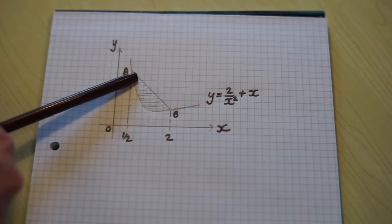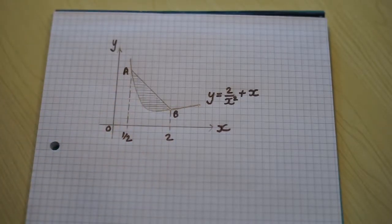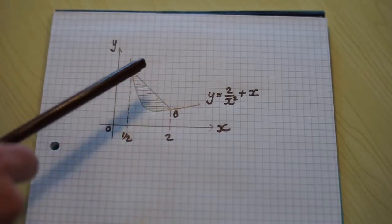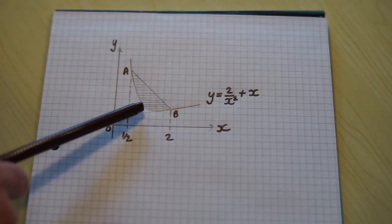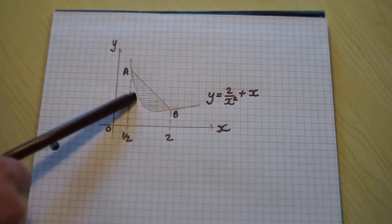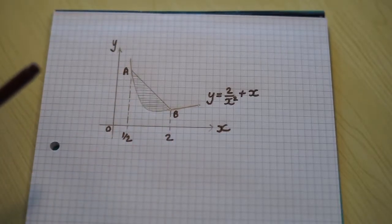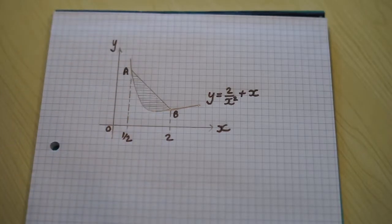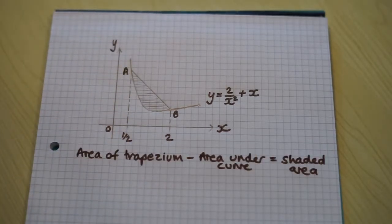We can see that, there it is. It is well within our ability to find the area of a trapezium. So we now have a plan. The area of the trapezium take away the area between the curve and the x-axis equals the shaded area. Let's go.